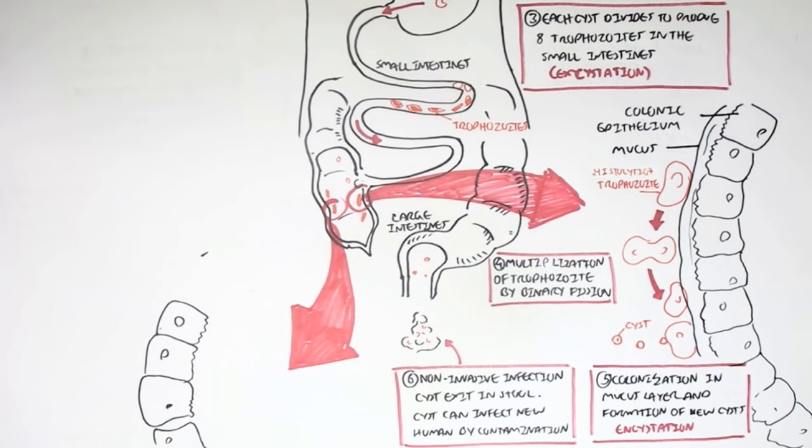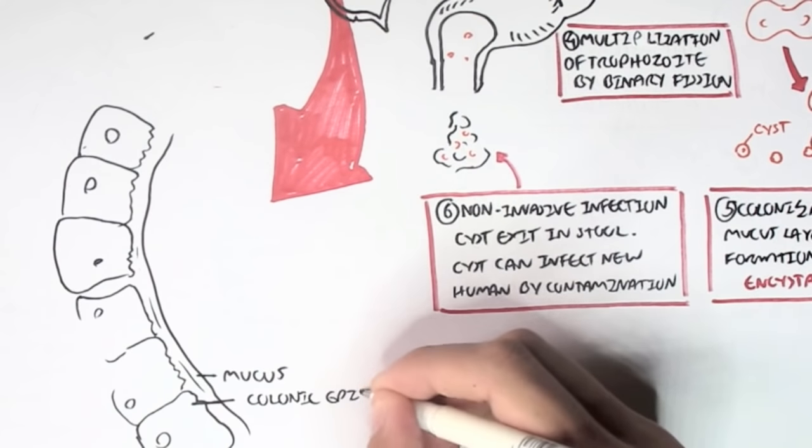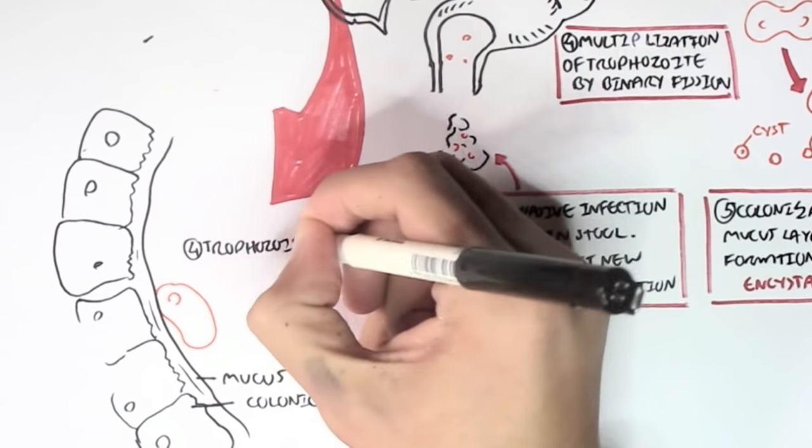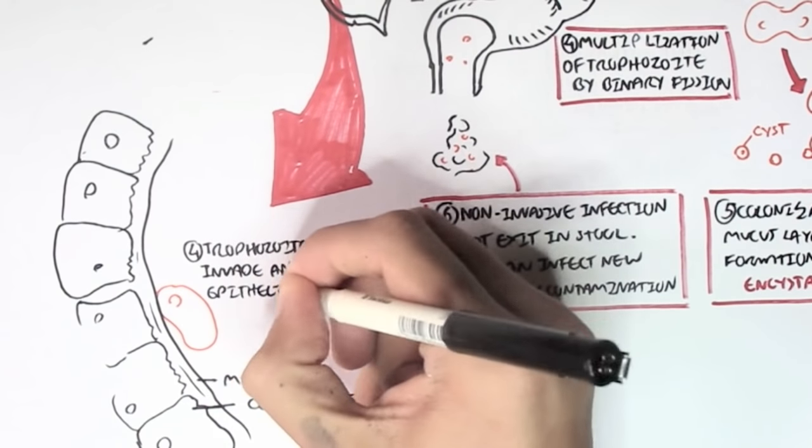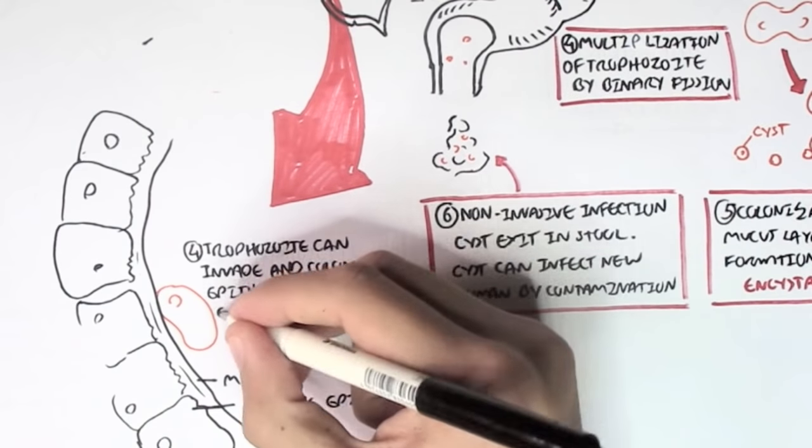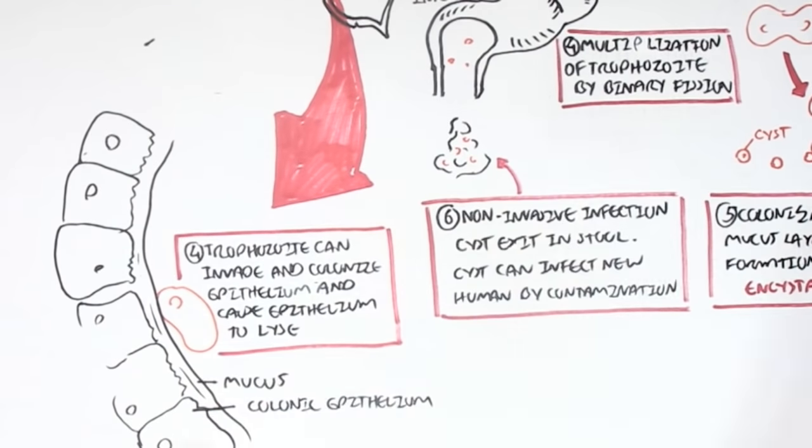Here again we have the colonic epithelial cells and the mucus. In an invasive infection, the trophozoites will invade and colonize the colonic epithelial cells. And this will cause the epithelial cells to lyse, to die.